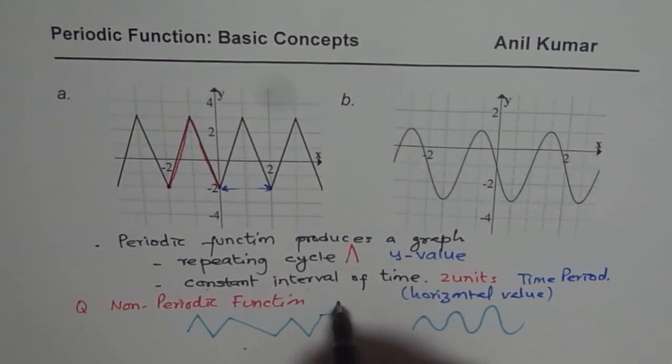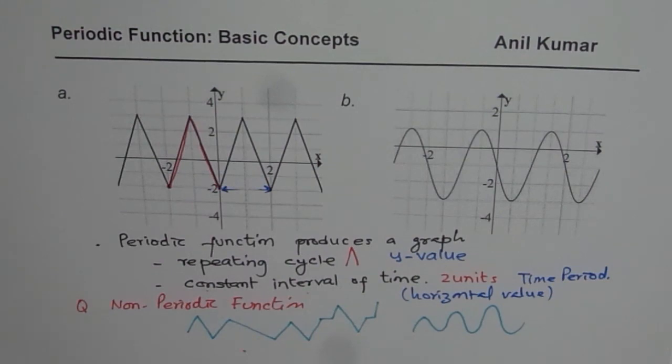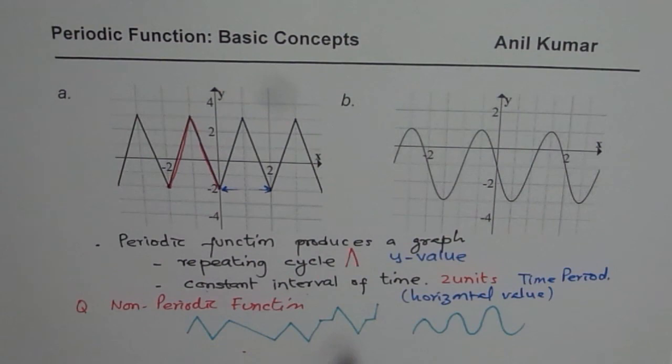So if I change this a bit, then it becomes not a periodic function because it may change after some time. So the whole cycle which we are looking at should be exactly same over the interval we are considering. So that is the basic concept. And let's move forward and understand a few more terms about our periodic functions.